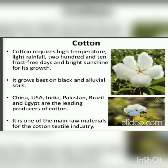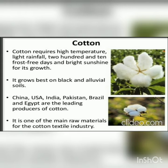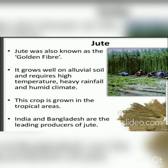Cotton is a fiber crop that requires high temperature, light rainfall, 210 frost-free days, and bright sunshine for its growth. It grows best on black and alluvial soil. China, USA, India, Pakistan, Brazil, and Egypt are the leading producers of cotton. It is one of the main raw materials for the cotton textile industry.